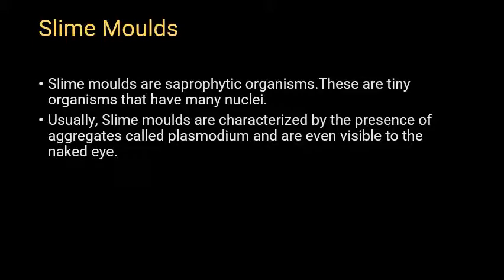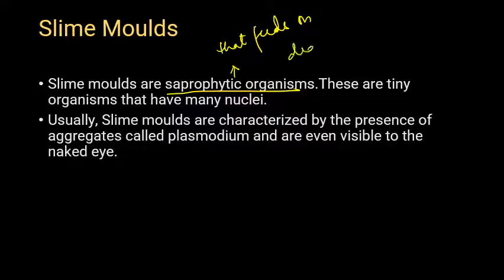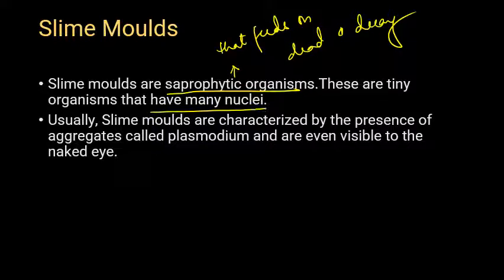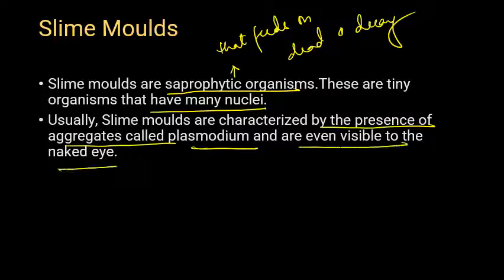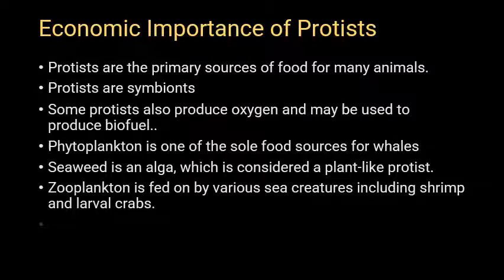Coming to slime molds: slime molds are saprophytic organisms — they feed on dead and decaying matter. They are tiny organisms that have many nuclei. Slime molds are characterized by the presence of aggregates called plasmodium and are even visible to the naked eye.